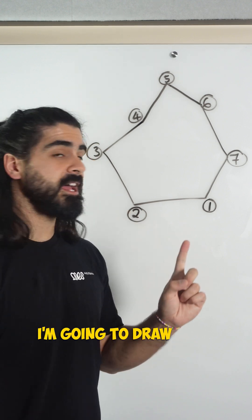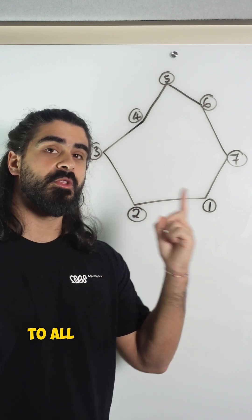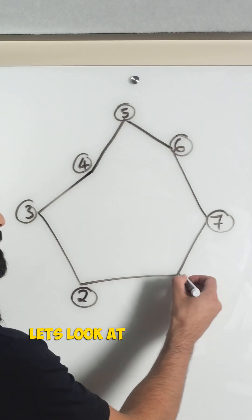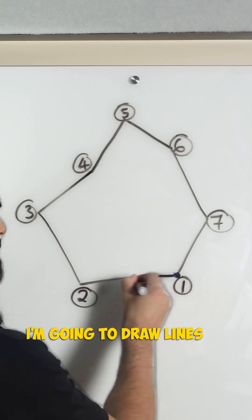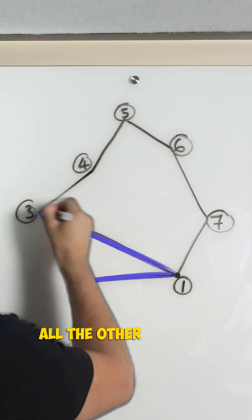Take a look at this heptagon. I'm going to draw lines from one vertex to all the other vertices. Let's look at number one. I'm going to draw lines to all the other vertices.